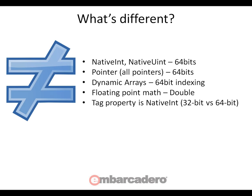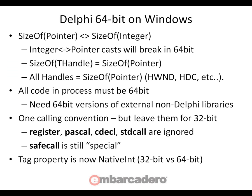Now what's different? NativeInt on 32-bit Windows is 32-bit, but NativeInt on 64-bit Windows is 64-bit with Delphi, so pay attention to your use of NativeInt and NativeUInt. Pointers are 32-bit on 32-bit Windows and 64-bit on 64-bit Windows. Dynamic arrays use 64-bit indexing on 64-bit Windows. Floating point is double precision on 64-bit Windows. And the Tag property has been changed from Integer to NativeInt, so it's 32-bit on 32-bit Windows and 64-bit on 64-bit Windows.